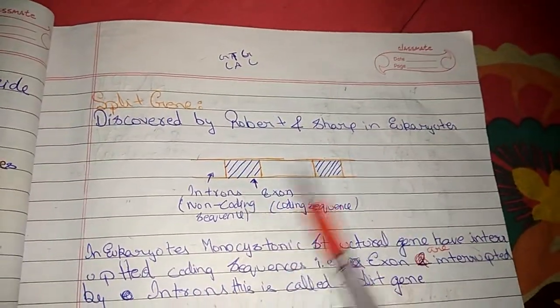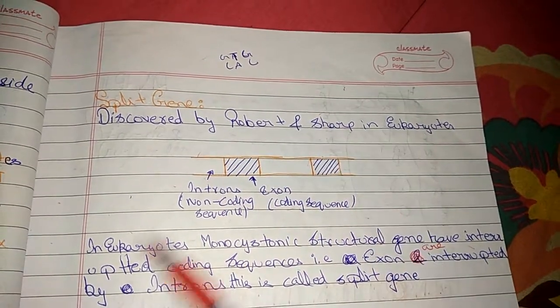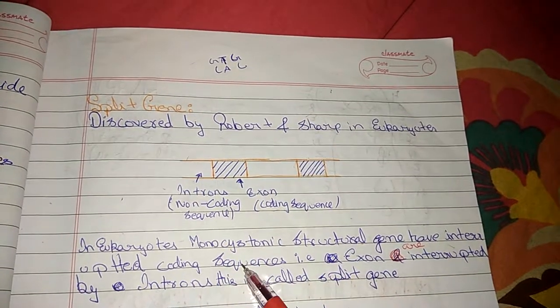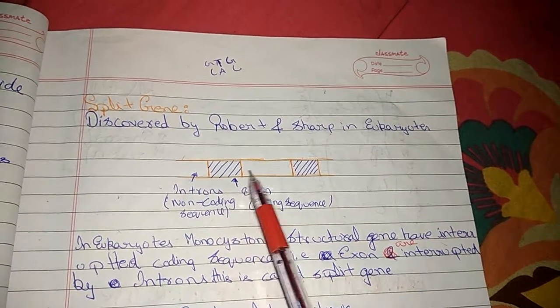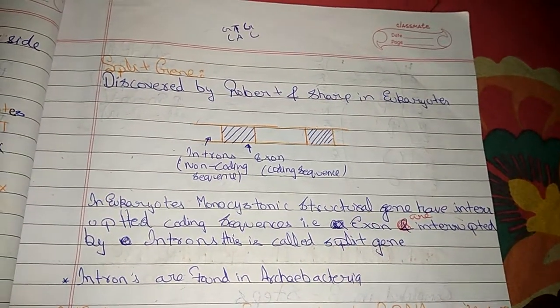Now the split gene. Split gene was discovered by Roberts and Sharp in eukaryotes. Introns and exons, that means in eukaryotic monocystronic structural genes have interrupted coding sequence. That is, exons are interrupted by introns. This is called split gene. Introns are found in Archaebacteria.